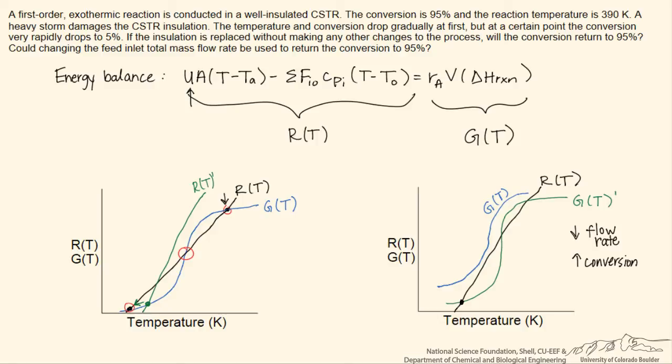So that will tend to shift the G curve this way from the green curve to the blue curve, and we see that we can move it such that the only point of intersection would be at higher conversion, so we would ignite the reactor.